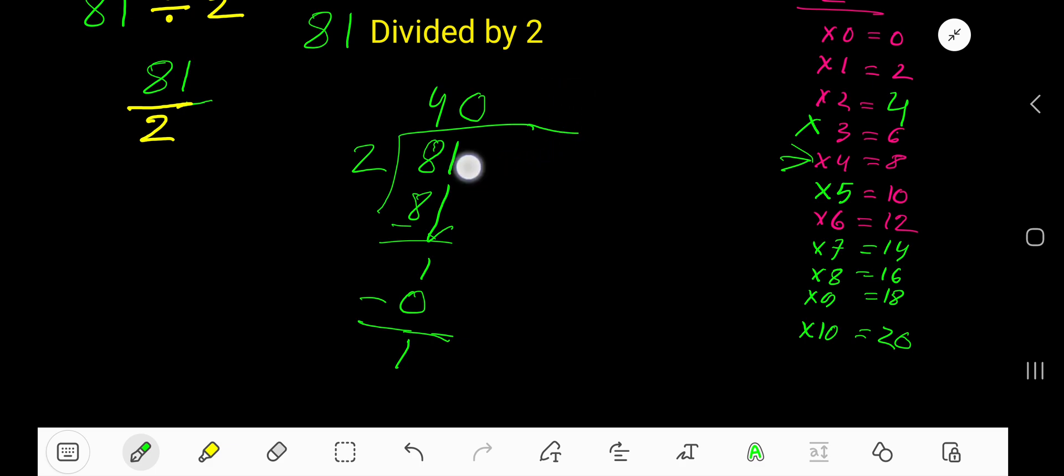Just take a decimal point, and you are allowed to take any number of zeros. Bring down the first 0. There is a decimal before this 0, so this decimal must come directly to the quotient. 2 goes into 10